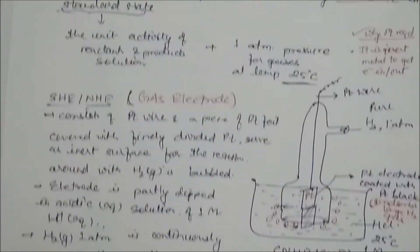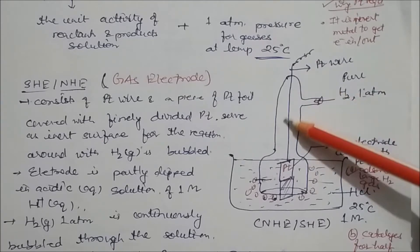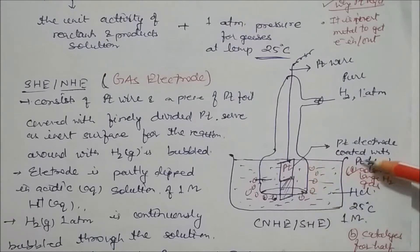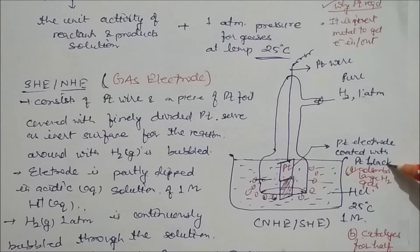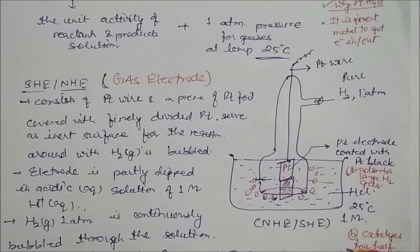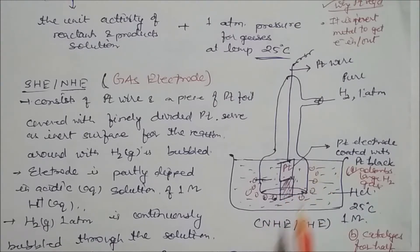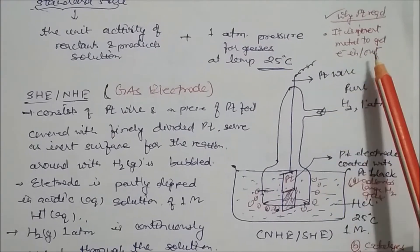Looking at the diagram: hydrogen gas is passed through a glass tube with a platinum wire. At the end of the platinum wire, the surface is coated with platinum black — a dark black coating. Platinum black is coated because it adsorbs a large number of hydrogen gas molecules. The solution is HCl at 25 degrees centigrade, one molar. This can be your NHE (Normal Hydrogen Electrode) or SHE (Standard Hydrogen Electrode). Platinum is used because it is an inert metal to allow electrons in and out.